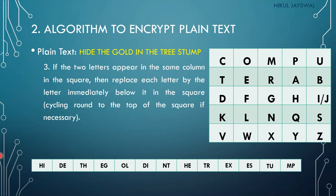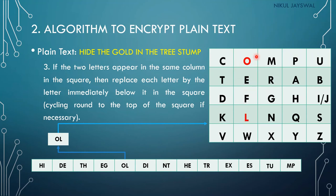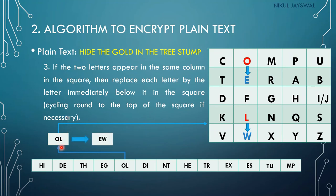Rule three: if the two letters appear in the same column of the key square, replace each letter with the letter immediately below it (wrapping cyclically to the top if necessary). For example, encrypting OL: O and L are in the same column. O is replaced by E and L is replaced by W. If the letter is at the bottom of the column, it wraps to the top.